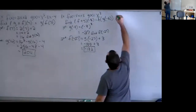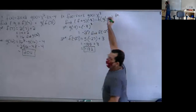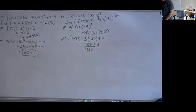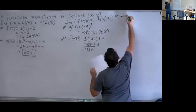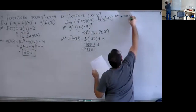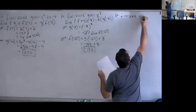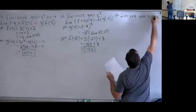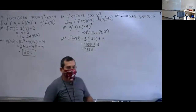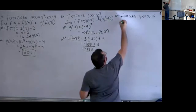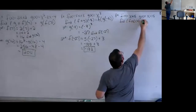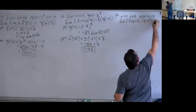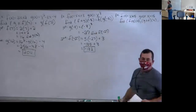Now the next one we're going to work with just variables and no numbers to plug in. So f of x is going to equal x plus 15, g of x is going to equal x minus 15. They want us to find f of g of x, g of f of x, and the domains of both.